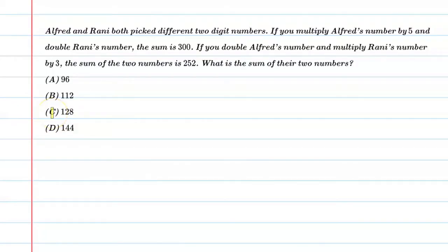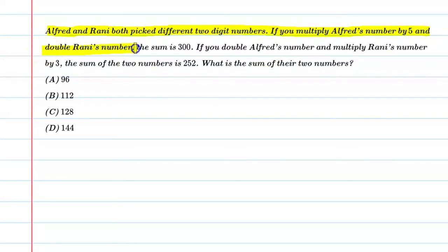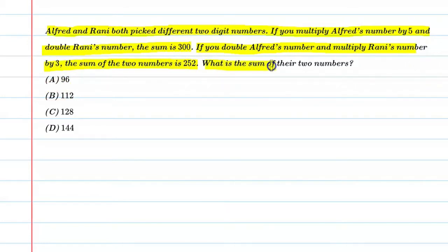Hello students, let's solve this question. Alfred and Rani both pick different two-digit numbers. If you multiply Alfred's number by 5 and double Rani's number, the sum is 300. If you double Alfred's number and multiply Rani's number by 3, the sum of the two numbers is 252. What is the sum of their two numbers?